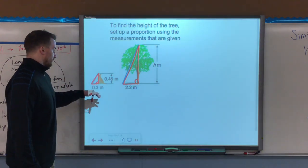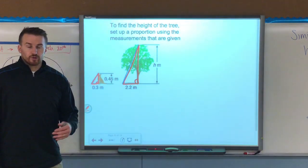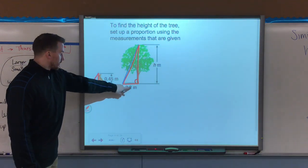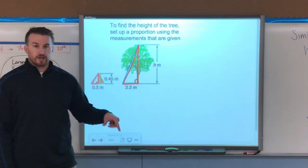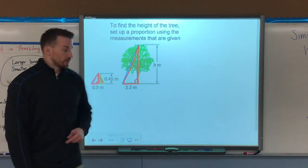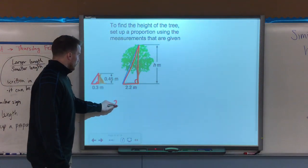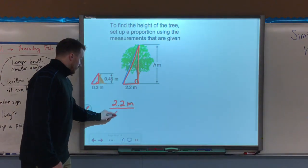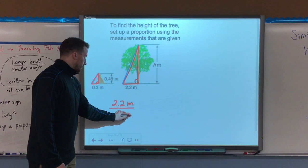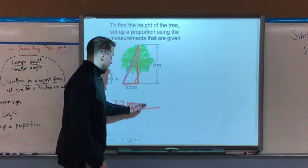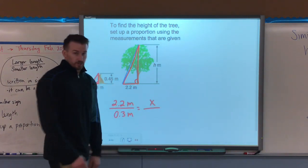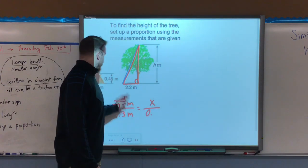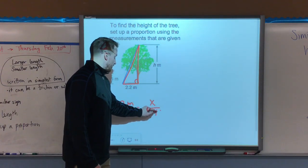So I need to set up a proportion. I'm going to place the shadow length over the shadow length to set it equal to the height over the height. So I'm putting 2.2 meters for the shadow length over the shadow of the dog, which is 0.3 meters. And I set that equal to x, because I don't know what the height of the tree is, over the height of the dog, which I know is 0.45 meters.